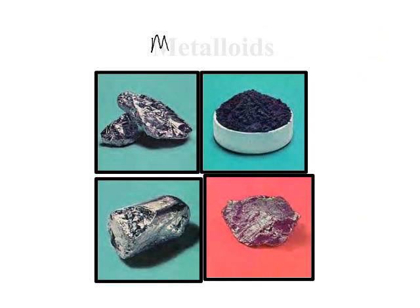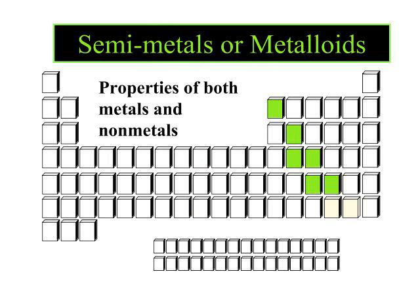Your semimetals or metalloids are elements that are unique and have properties of both metals and nonmetals. They are getting to that point where they are losing metallic properties and gaining nonmetallic properties, and they often have properties of both. They may still conduct electricity but be brittle. They may be brittle and have luster. It's just a very unique blending of properties as you move from metal to nonmetal.